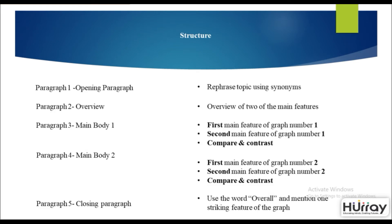Here is the recommended structure. Paragraph one is your opening paragraph — use synonyms to rephrase the topic. Paragraph two is the overview, where you mention two main features. Body paragraph one, your third paragraph, covers the first and second main features of the first image — compare and contrast. Body paragraph two, your fourth paragraph, covers the features of the second image. Finally, the closing paragraph should use the word 'overall' and mention one striking feature of the graph.